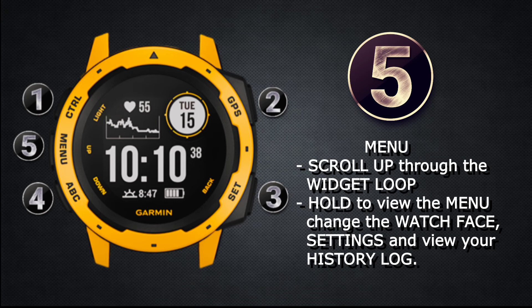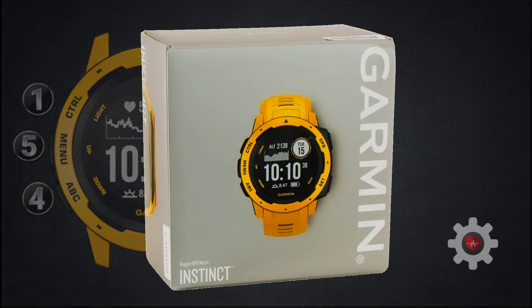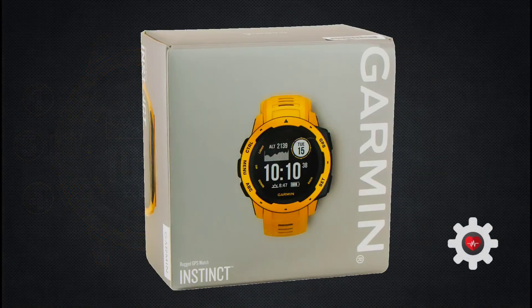Button five is the final function button, labeled MENU. Pressing this button when in a widget loop or a menu will advance it upwards. A long press on this button brings up the main menu of the watch, where you can change the watch face, change your settings, and view your history log.